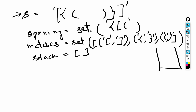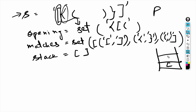We'll traverse through the string. For each character p, we'll check if it's present in the 'opening' set. If it is, that character will be added to the stack. We continue through the string — the second and third characters also get added to the stack because they are present in the opening set.